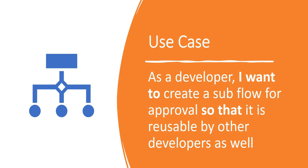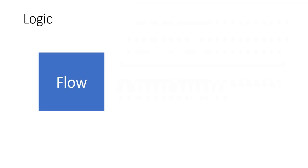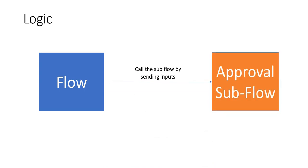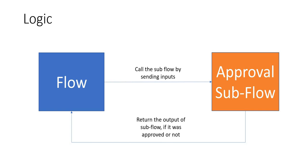This is the use case: as a developer, I want to create a subflow for approval so that it is reusable by other developers as well. If you are promoting citizen developers, they can come here and use this subflow for their flows. The logic would be there is a main flow for a catalog item, and you will call your approval subflow by sending some inputs, and the subflow will return whether the request was approved or not.